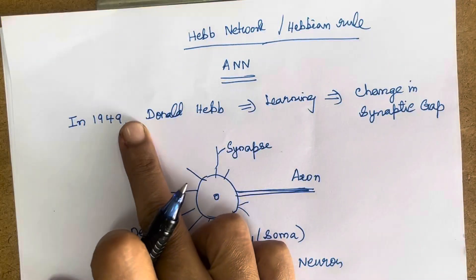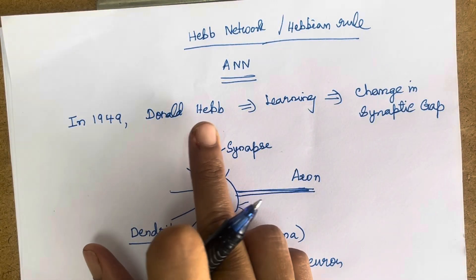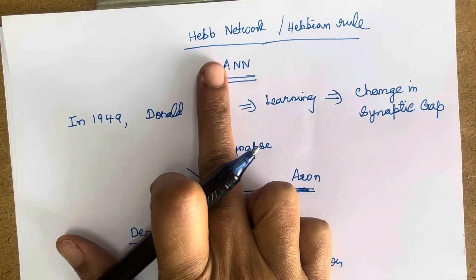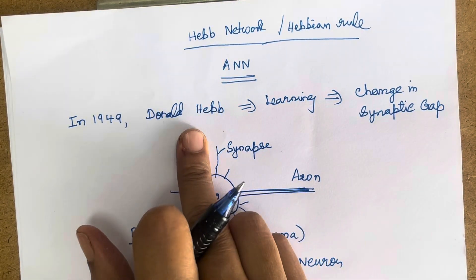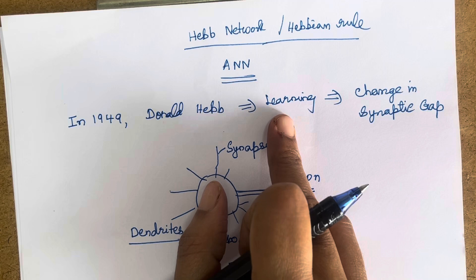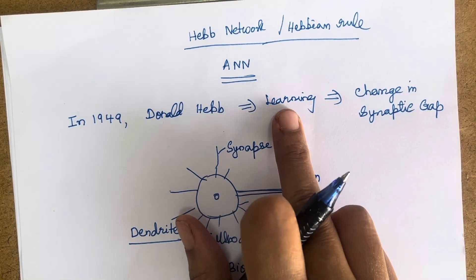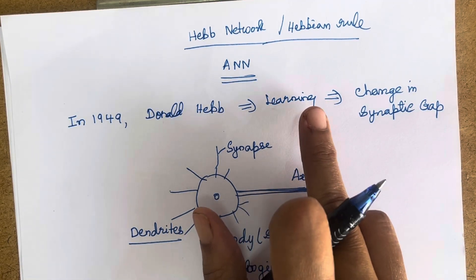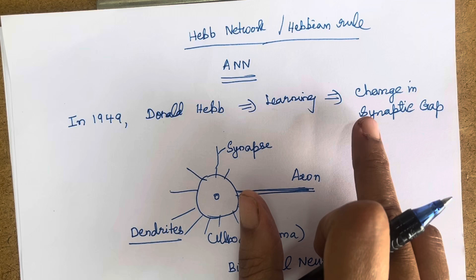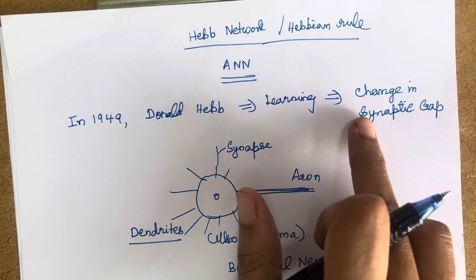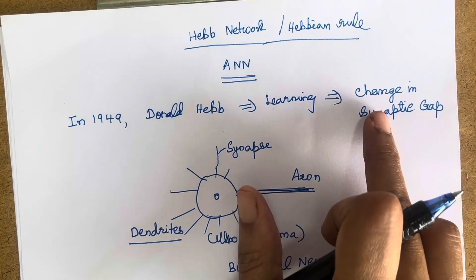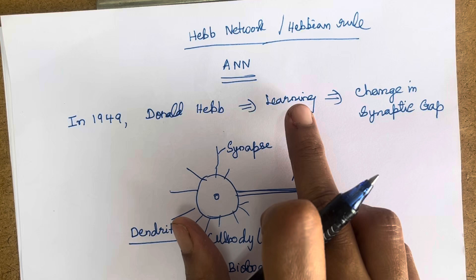In 1949, Donald Hebb introduced this Hebb network. He says that whenever there is learning in the brain, if learning has to occur, it is because of the change in the synaptic gap. Because of the metabolic change or growth in the synaptic gap, learning occurs in the brain.